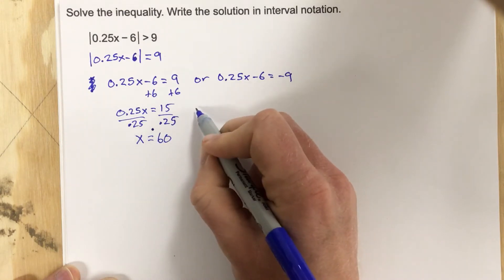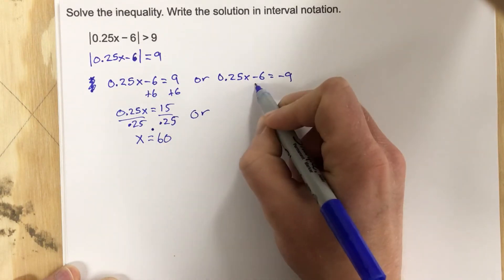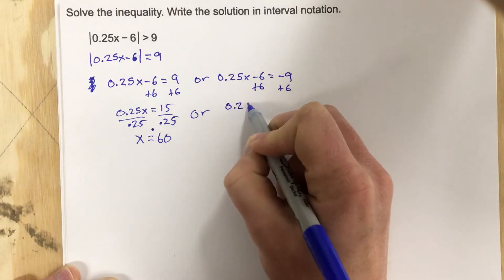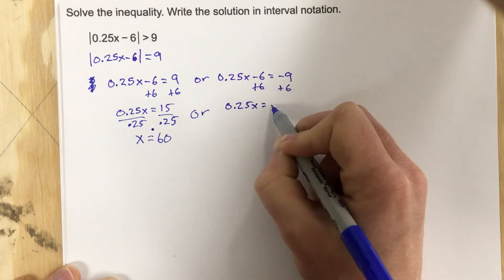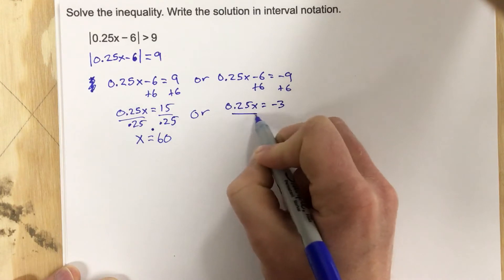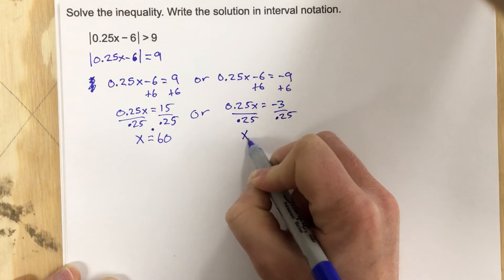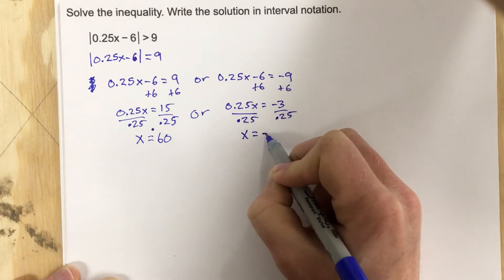And then, let's add the 6, add the 6. This is 0.25x equals negative 3. Divide by 0.25, and we get x equals negative 12.